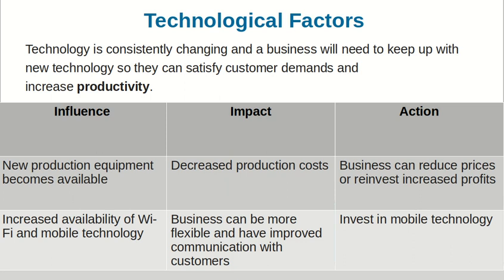Technological Factors. Technology is consistently changing and a business will need to keep up with new technology so they can satisfy customer demands and increase productivity. If new production equipment becomes available, there will be decreased production costs and businesses can reduce prices or reinvest increased profits. Increased availability of Wi-Fi and mobile technology means businesses can be more flexible, have improved communication with customers, and can invest in mobile technology.